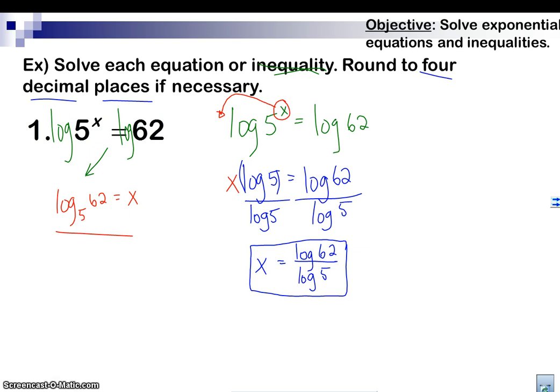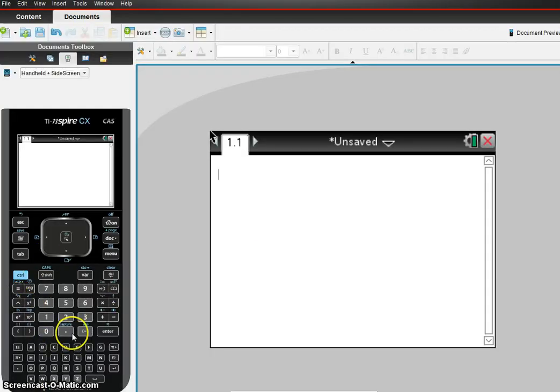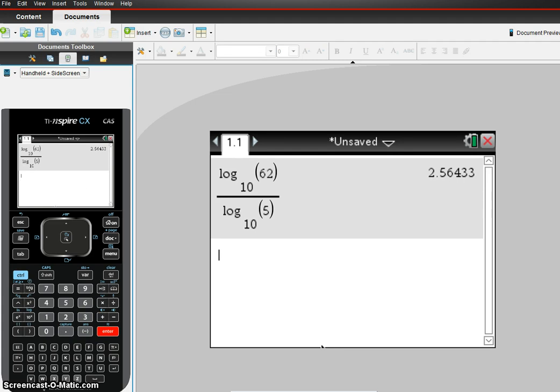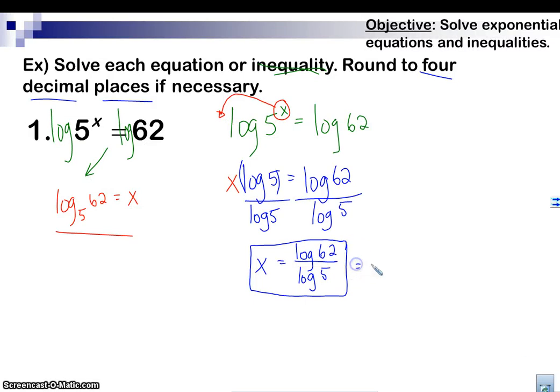So, let's see where my calculator is on this thing. All right? So, here I am in my TI Inspire. I'm going to make this a fraction here. And I'm going to have log base 10 of 62 over log base 10 of 5. So, then they get 2.5643, right? 4 decimal places. 2.5643.